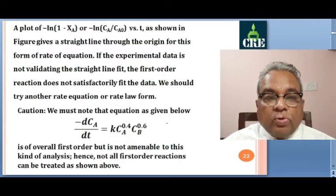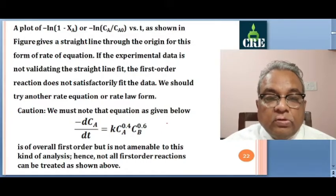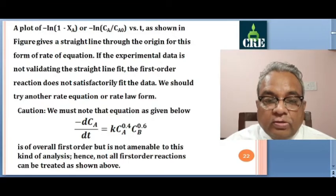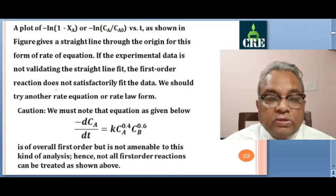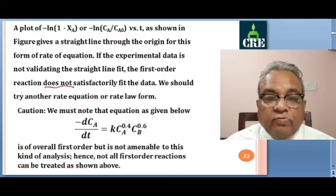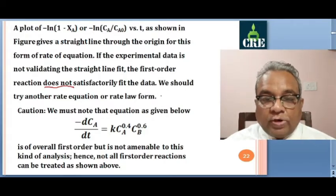This plot gives a straight line which passes through the origin. If experimental data is not fitting well, if there is a lot of scatter, then we say that the first order relation does not satisfactorily fit our data and we have to try another form of rate equation, another form of rate law.